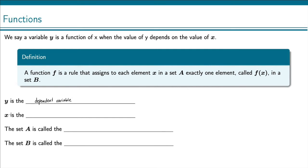Now because x can be anything it wants to be, x is called the independent variable.